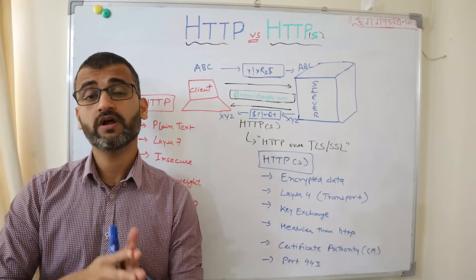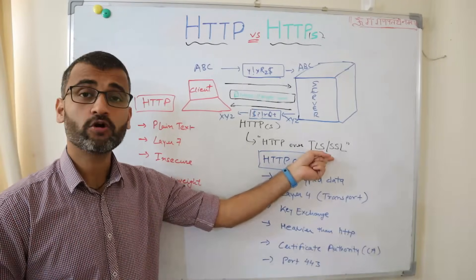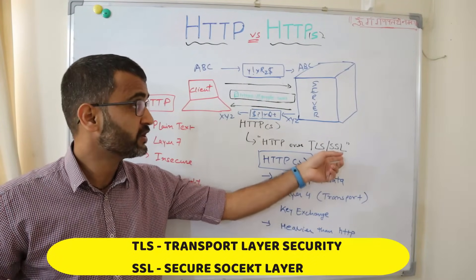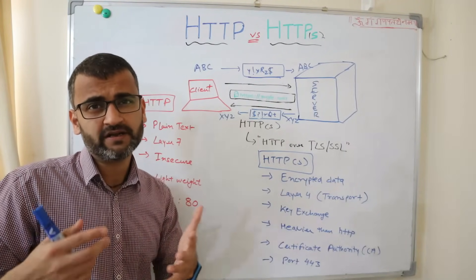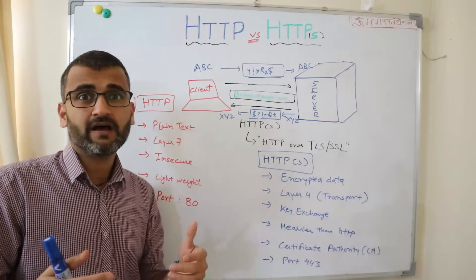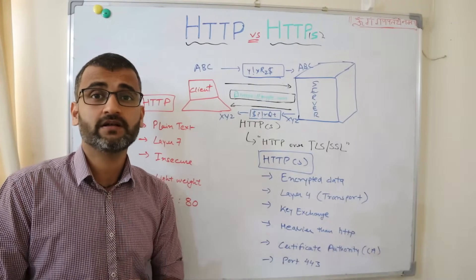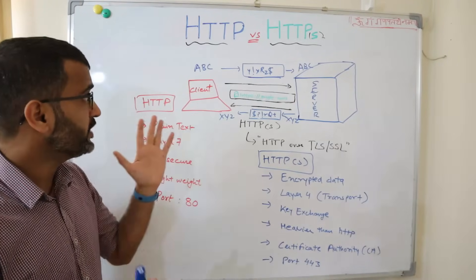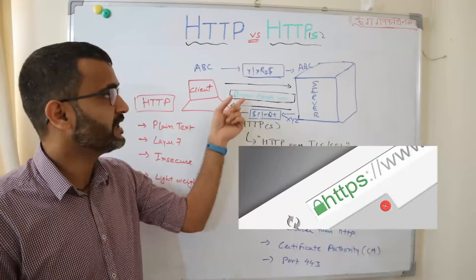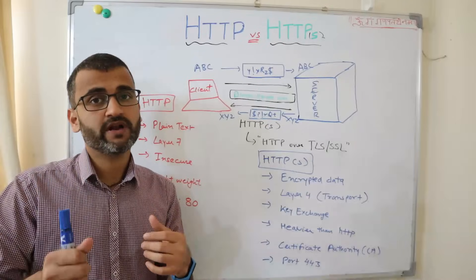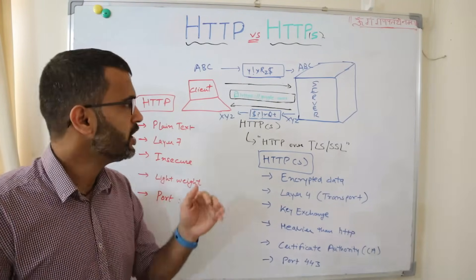HTTPS has an additional layer of security provided through SSL or TLS protocol — Transport Layer Security or Secure Socket Layer. SSL was the earlier version; TLS is the later version, and these two terms are used interchangeably. You can think of HTTPS as a younger cousin of HTTP with an overlay of TLS/SSL. Whenever you open a bank website or any secured site, you'll see a green padlock in the browser, indicating you're in a secure HTTPS communication channel.